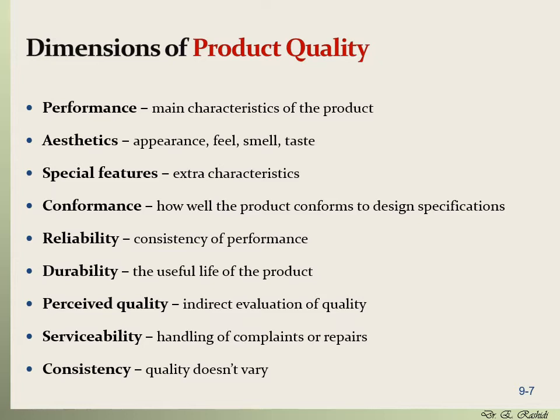Another dimension for product quality is conformance — that's how well the product conforms to design specifications. Another criteria is reliability — how reliable the product is, or the consistency of performance. It's not just that it has to perform well; it has to maintain the consistency of performing well.